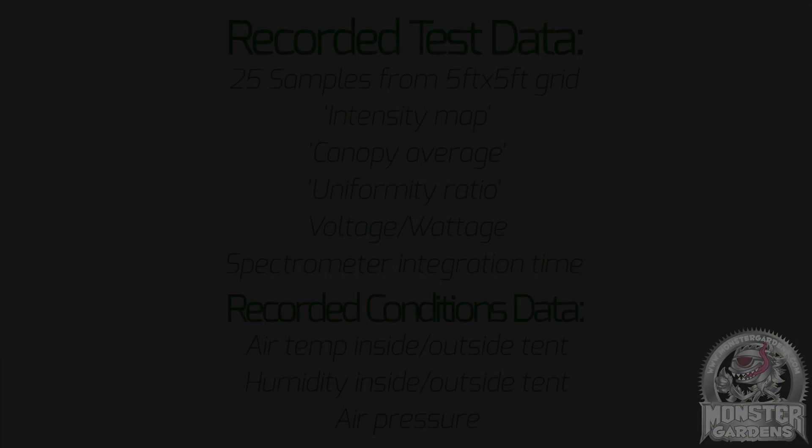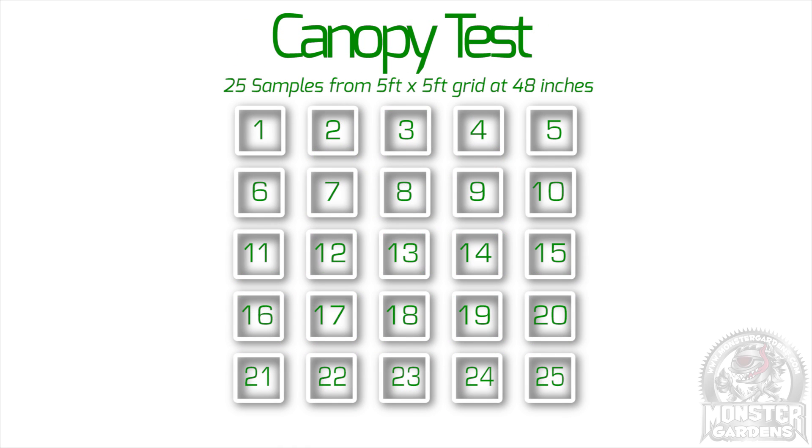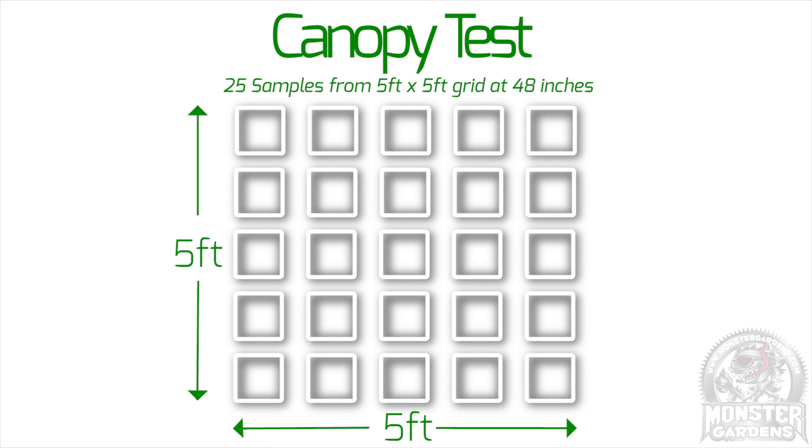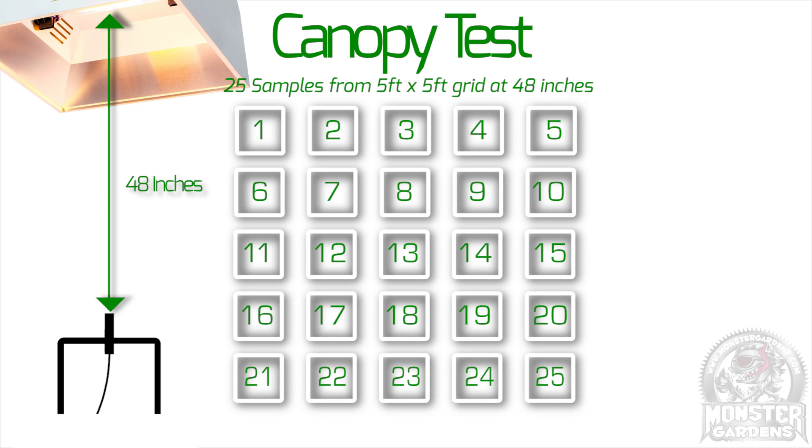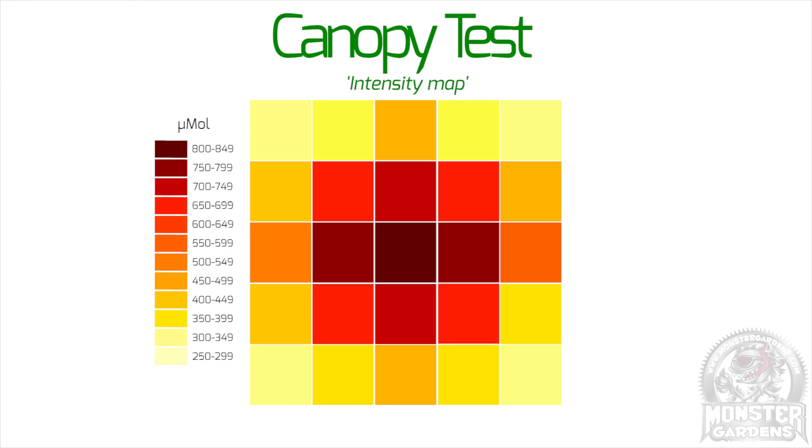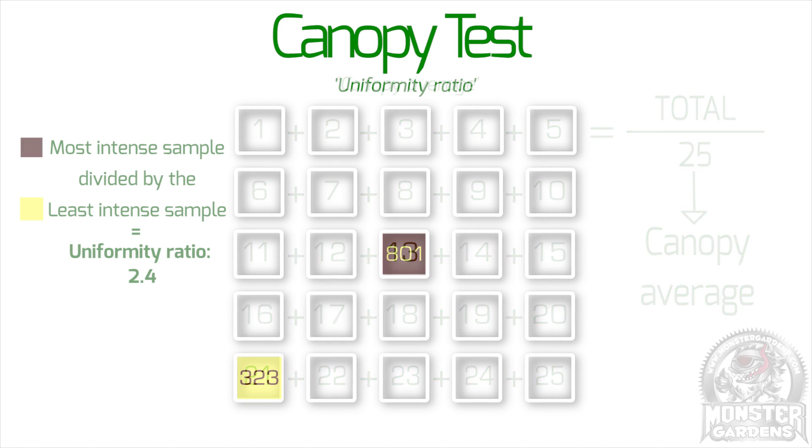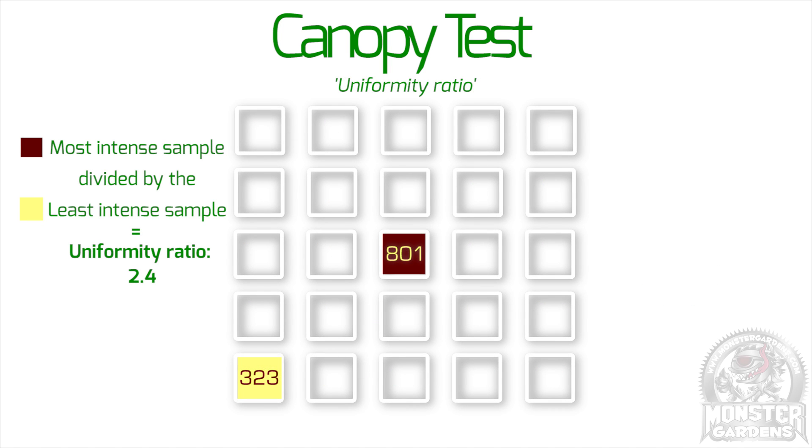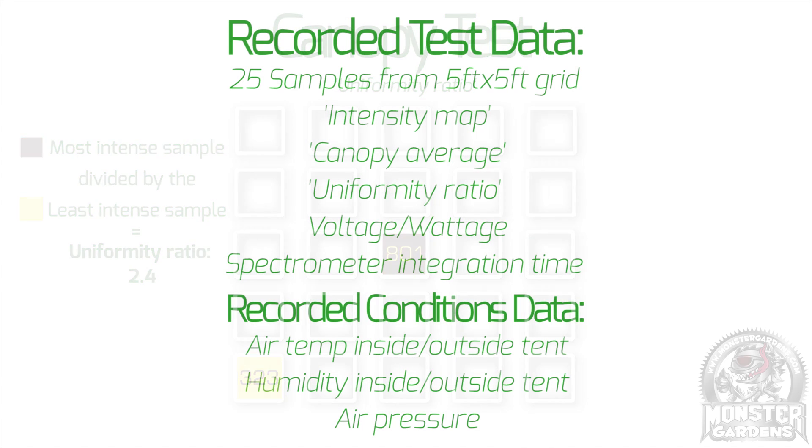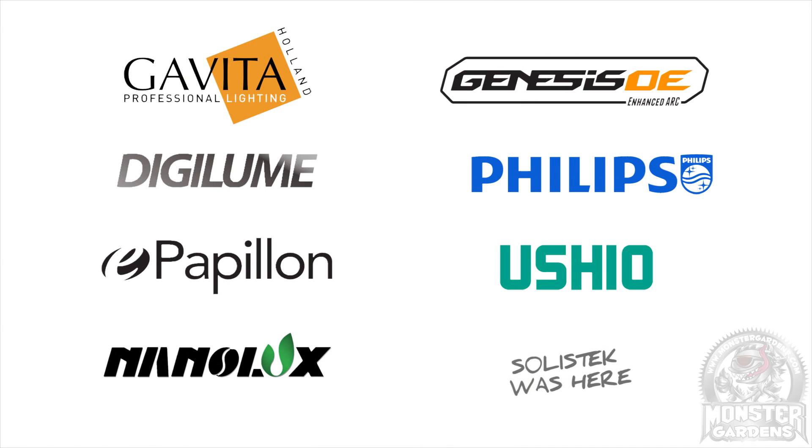Today we'll be recording all the usual data using our 25 sample canopy test on our 5 foot by 5 foot grid at a height of 48 inches. Including our intensity maps, the canopy average, and uniformity ratio. As well as the usual conditions data for each of the bulbs, except of course the ill-fated Solastek.